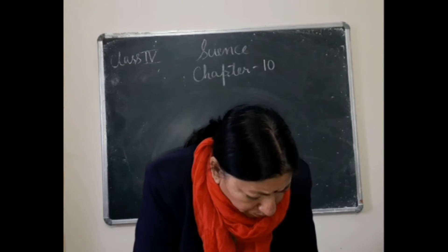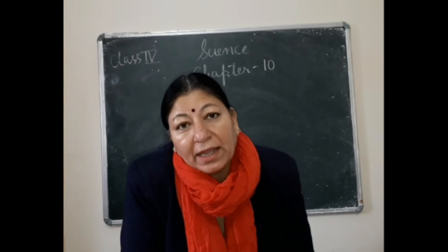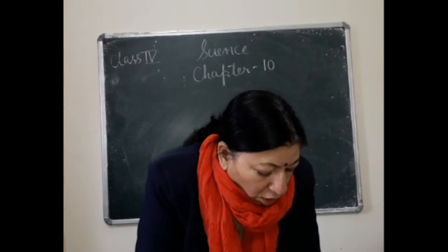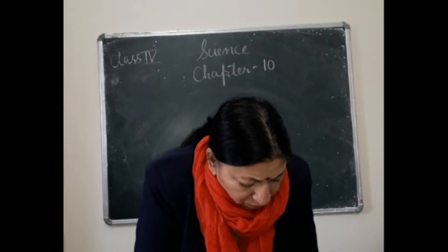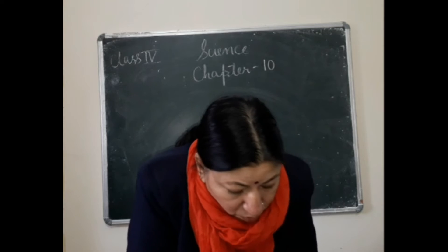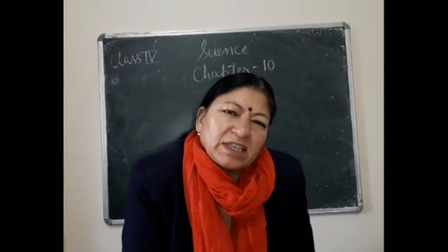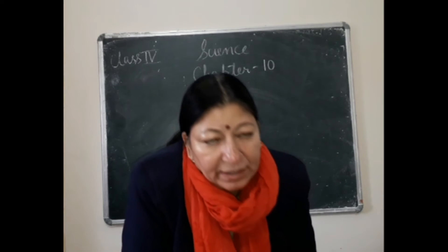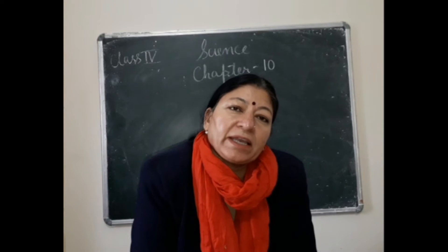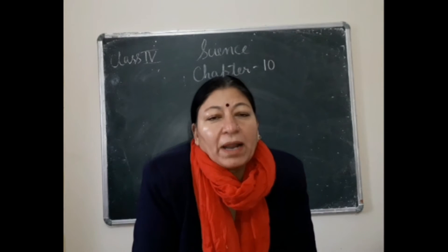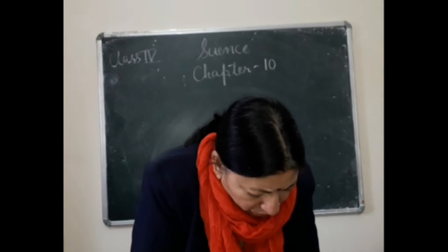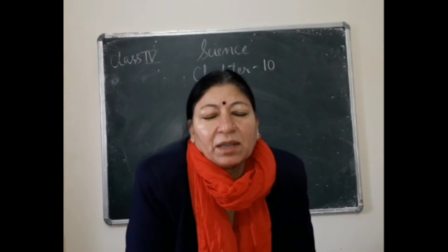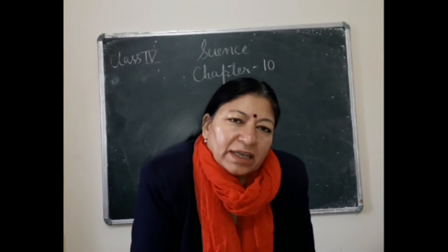There are three main layers of soil. They are: number one, topsoil; number two, subsoil; and number three, bedrocks. Topsoil is the uppermost layer of earth. It is a few inches thick, in which roots of plants grow. It is also called the humus layer. Humus layer means decaying plants and animals. It consists of deposits of plant material.